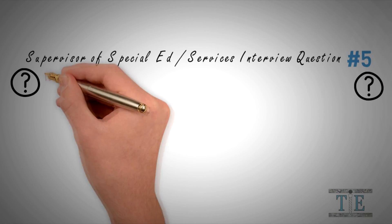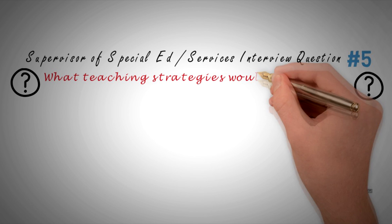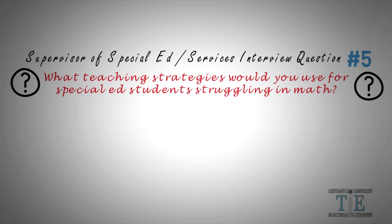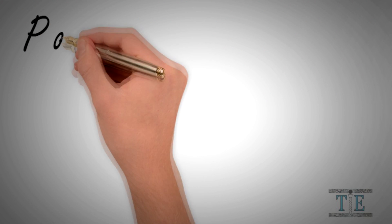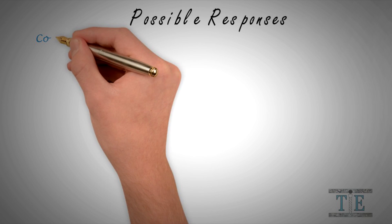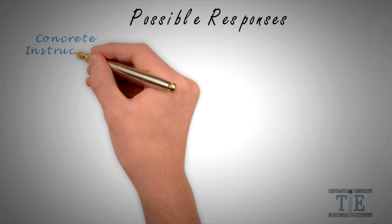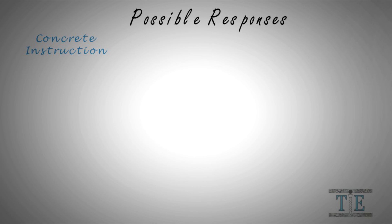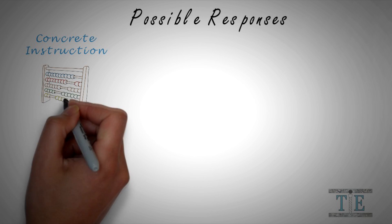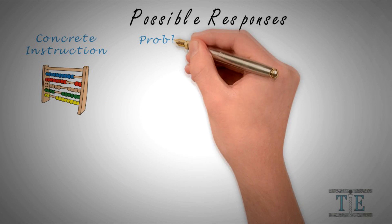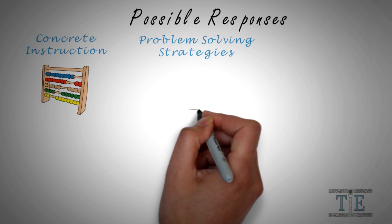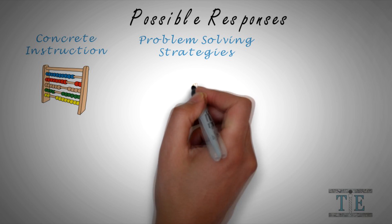Interview question number five. Here is a question that is frequently asked: What types of strategy would you use for special education students struggling in mathematics? There are many acceptable answers, but here are just a few possible responses. The first strategy should be concrete instruction. The concrete instruction model uses concrete symbols that express a concept — it's a three-part system that includes concrete, representational, and the abstract. Second, use problem-solving strategies. Having special education students learn problem-solving strategies will help them excel on higher-order thinking questions.